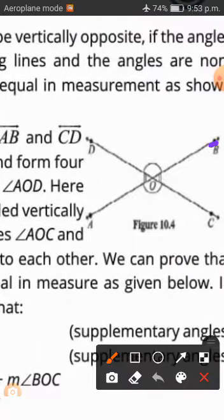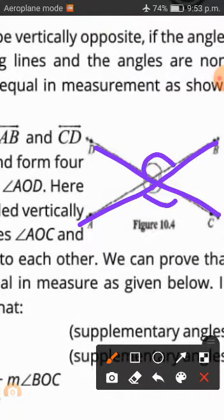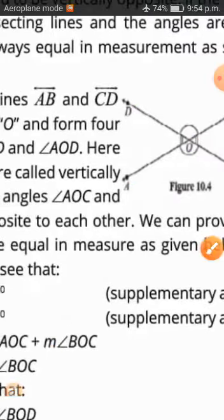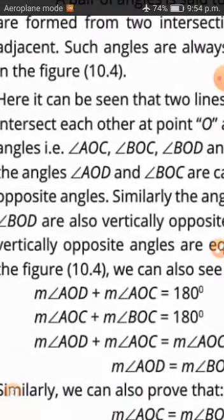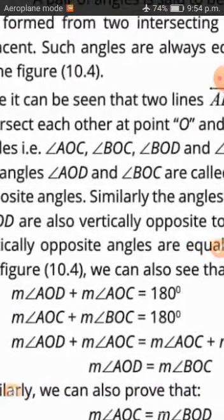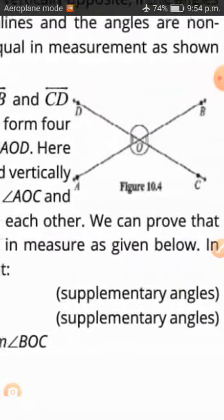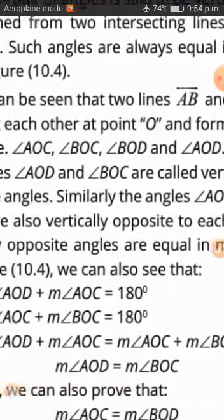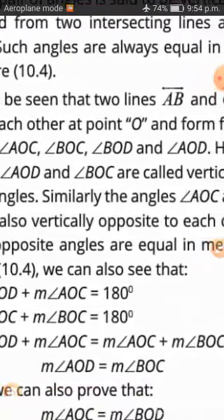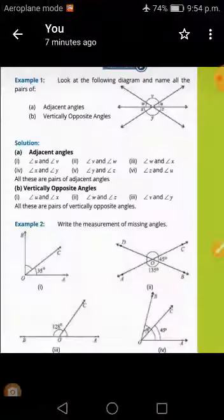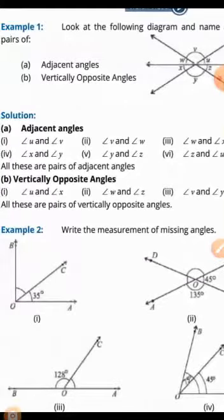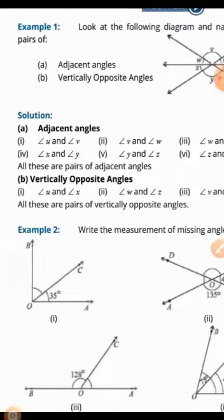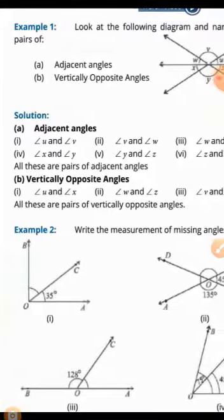So these angles are the same. AOD and AOC are 180 degrees — these are supplementary. Now, Example 1: Look at the following diagram and name all the adjacent angles and vertically opposite angles.